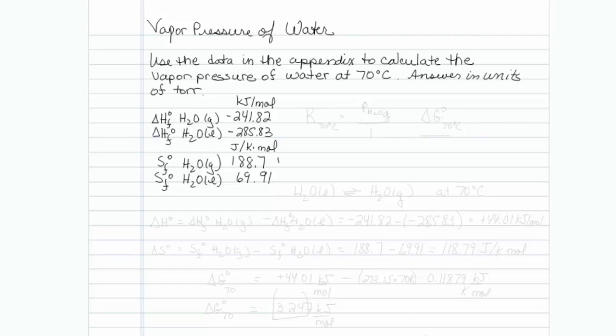This is how to get the vapor pressure of water at a particular temperature using free energy at standard state at 70 degrees Celsius and the equilibrium constant. The question reads, use the data in the appendix to calculate the vapor pressure of water at 70 degrees Celsius, and our answer is to be in units of torr.